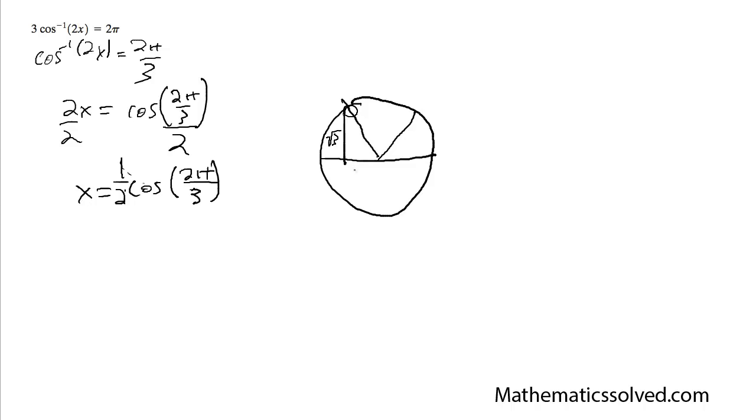This is root 3. This is 1. This is 2. So it's cosine, so it's negative. Well, this is negative 1, negative 1 over 2.